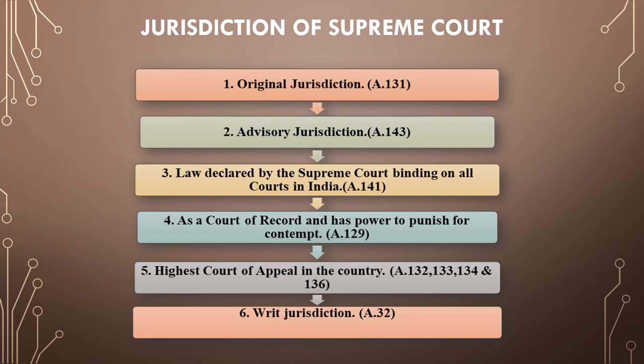The first jurisdiction is original jurisdiction, defined under Article 131. Second is advisory jurisdiction under Article 143. Third is law declared by the Supreme Court binding on all courts in India, under Article 141. Fourth is court of record with power to punish for contempt, under Article 129. Fifth is the highest court of appeal, and sixth is the writ jurisdiction. From the next slides, I will discuss these jurisdictions in detail.